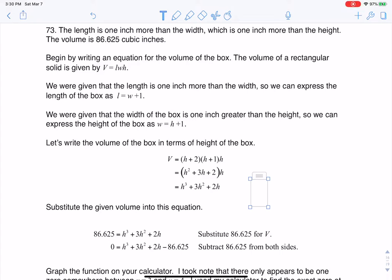Hey, Mount 31, I had a question coming out of section 5.5, number 73. Here we were told that we had a box, and the length was one inch more than the width, which was one inch more than the height, and the volume in total was 86.625 cubic inches.